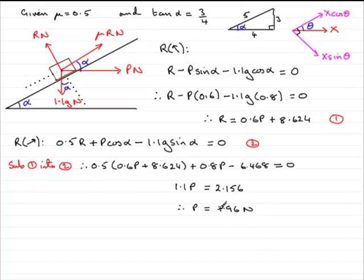What we need to do now, now that we've got p, is just substitute this back into equation 1 because that's the simplest one and we can get r. So, substitute p equals 1.96 into equation 1, then what we have is r equals 0.6 multiplied by 1.96 for the p and then plus 8.624. And what we've got then is that if you work that one out, you get 9.8 newtons.